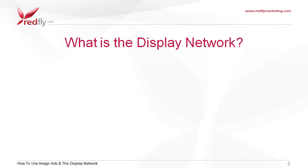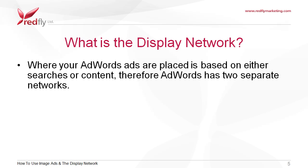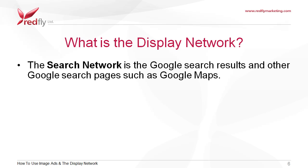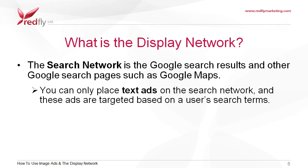So what is the display network? Where your AdWords ads are placed is based on either searches or content. Therefore, AdWords has two separate networks: the search network and the display network. The search network is the Google search results and other Google search pages, such as Google Maps. You can only place text ads on the search network and these ads are targeted based on a user's search terms.